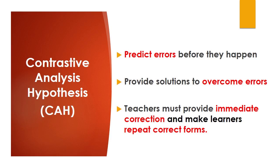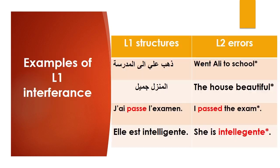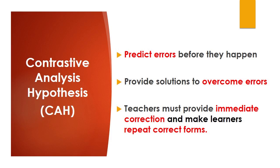Contrastive analysis hypothesis is based on the idea that we need to predict these errors and try to prevent them before they happen. For instance, it predicts that a Moroccan student learning English as a foreign language will have to deal with the interference of two or three languages including Arabic, French, and Amazigh. Consequently, Moroccan English language learners will make the following mistakes: they will start sentences with verbs as in Arabic; use feminine -e for female-referenced words as in French; use sentences without the verb 'to be' as in Arabic; use 'water' in the plural form as in Amazigh; and use false friends transferred from French into English. Thus, teachers and textbook designers need to be aware of these errors and provide practice activities to help prevent them before they happen.